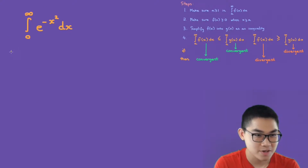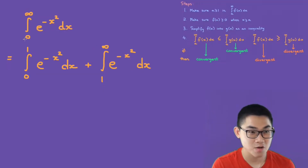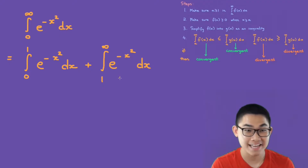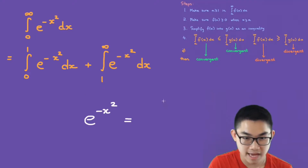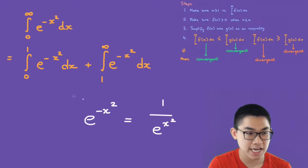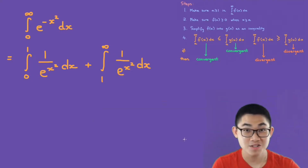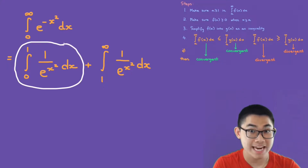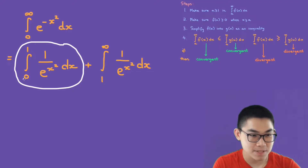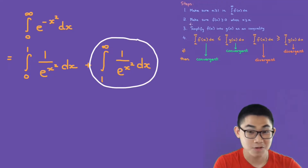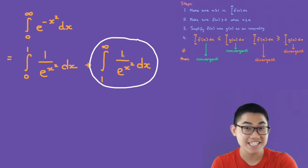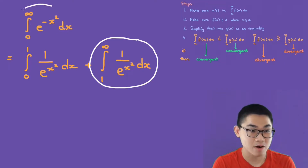We split the integral from zero to infinity into from zero to one, and then from one to infinity. Notice that e to the power of negative x squared is the same thing as one over e to the power of x squared. Now, notice that the integral from zero to one is not improper — there is no infinity sign at the top or bottom, and when x is between zero and one the denominator is never equal to zero. So the integral from one to infinity is the improper one, and for steps two, three, and four we'll focus on that integral. If that integral is convergent, our original function is convergent, and if it's divergent, the original is divergent.